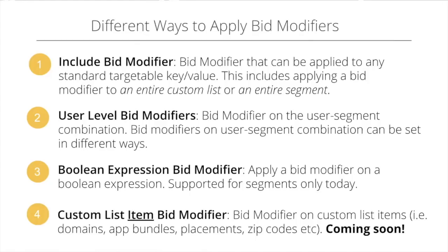For example, you could write: 'user is in segment A and segment B but not segment C' — and on that combination apply a bid modifier of three. The fourth type is custom list item bid modifiers, where each individual app or domain in a list can have a different modifier. This feature is coming in a couple of weeks.